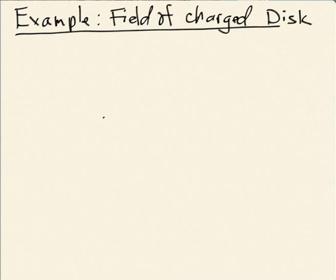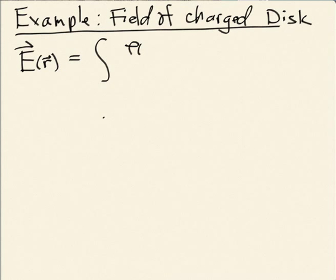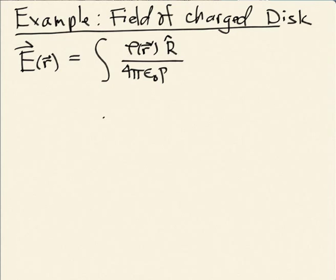Let me do an example calculation, considering a continuous charge distribution. The electric field, as a function of observer position, is the integral over dq — the contribution from each little element. For a volume distribution with charge density rho depending on location r-prime, you integrate rho times r-hat over r-squared, times the volume element d-cubed r-prime, divided by 4 pi epsilon-naught.